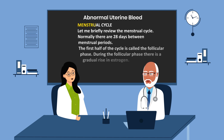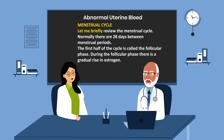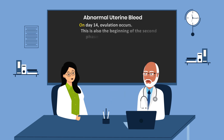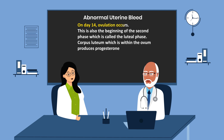Let me briefly review the menstrual cycle. Normally there are 28 days between menstrual periods. The first half of the cycle is called the follicular phase. During the follicular phase there is a gradual rise in estrogen. On day 14, ovulation occurs. This is also the beginning of the second phase, which is called the luteal phase.